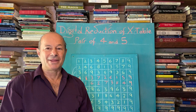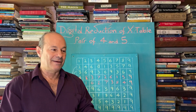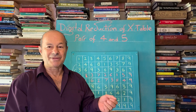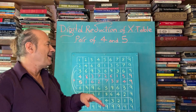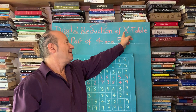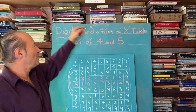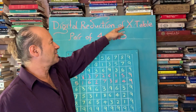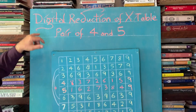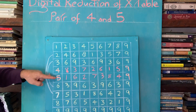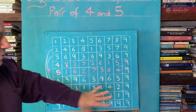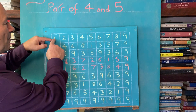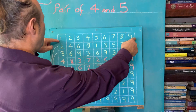I'd like to talk about the magic of nine and one of my favorite topics — introducing mathematics at an early stage to young students via our multiplication table. This is called the digital reduction of the times table, and in this lesson we're going to look at the pairs of four and five. But first we need to look at the whole multiplication table as a unit. The one times table goes one to nine, and the two times table goes two, four, six, eight.